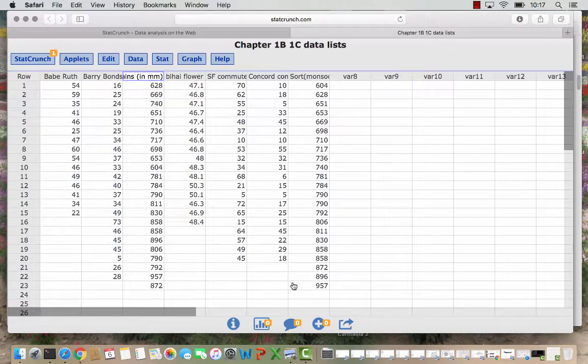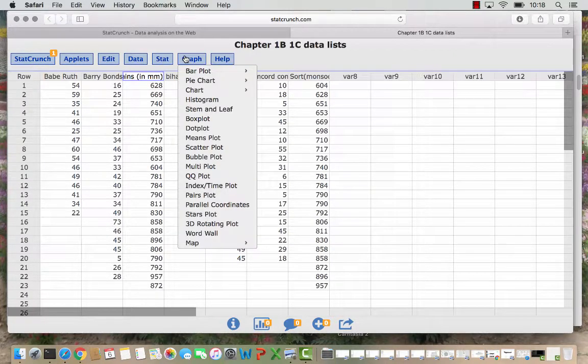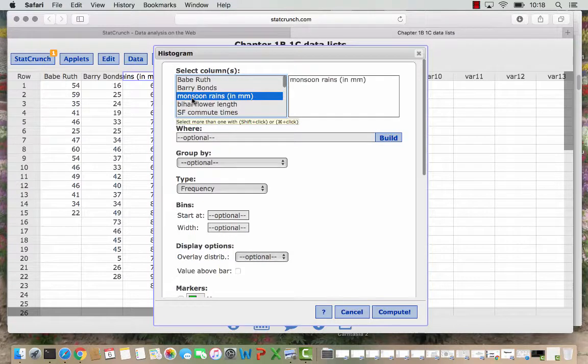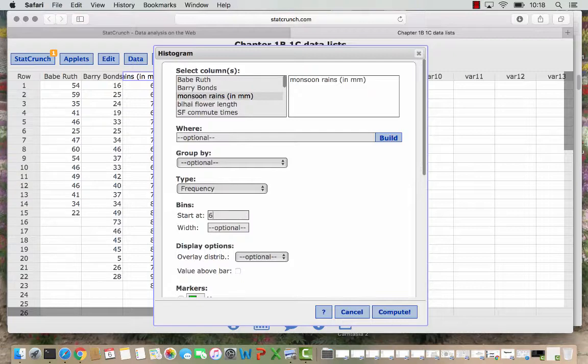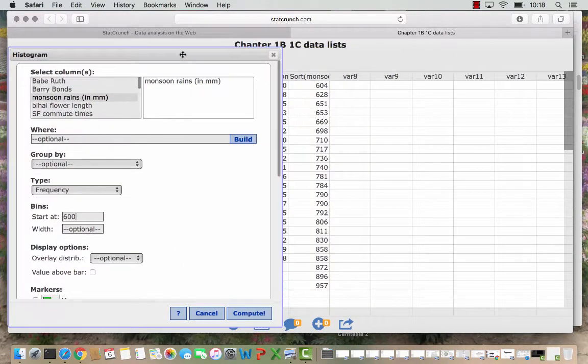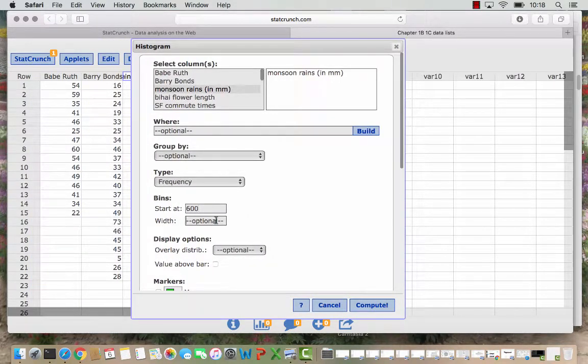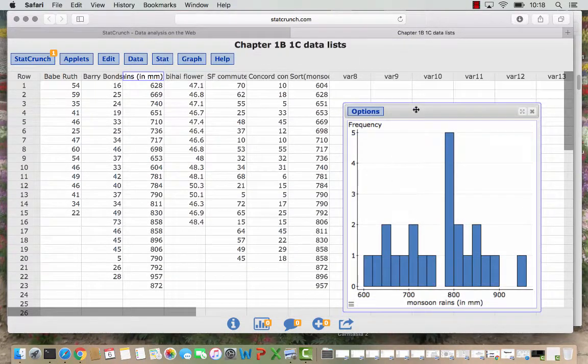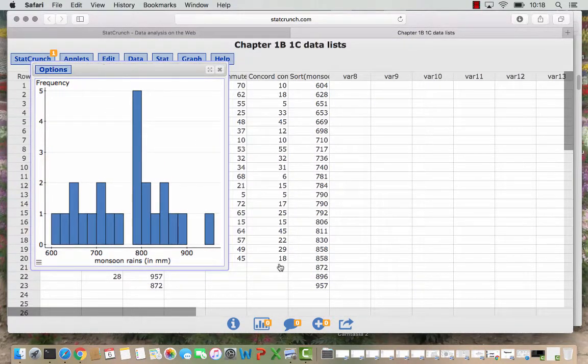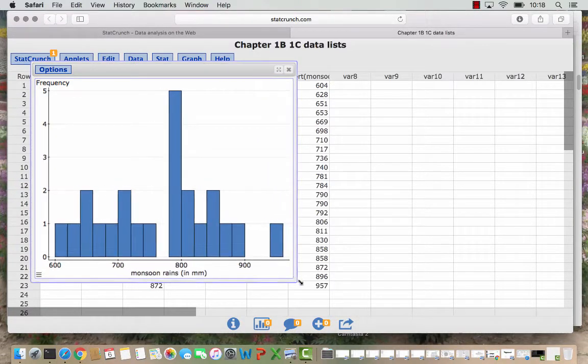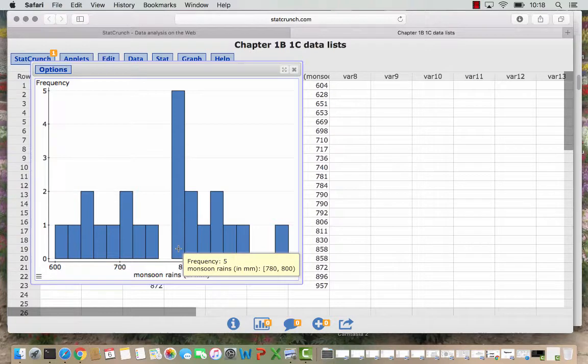So now let's make some histograms with the different bin sizes. So we go to graph, histogram, and we choose the monsoon rains column. I'm going to have my bins start at say 600 because our minimum was 604 millimeters. And then since our max goes all the way up to 957, I'm going to say the width will be 20s. And let's see how that histogram looks.